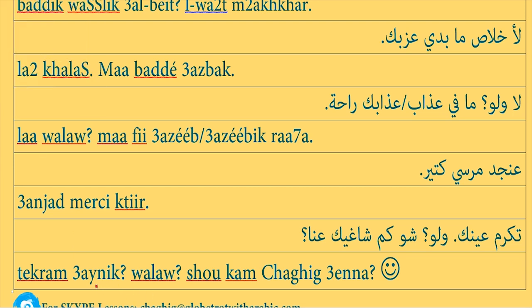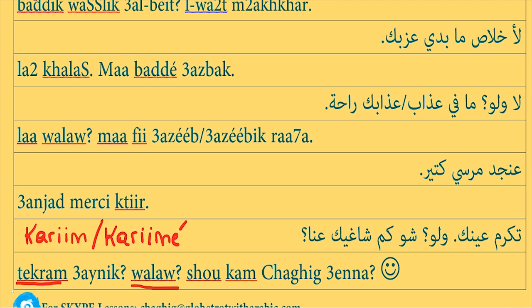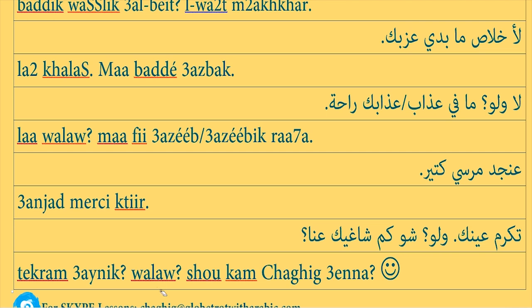From the verb تكرم we can extract the word كريم — the adjective meaning 'generous' in the masculine form, and كريمة in the feminine form. تكرم عينك is used when talking to a woman; تكرم عينك when talking to a man. The person also says ولو — you can use this in different contexts. In this positive context ولو means 'of course'. In a negative context, if someone does something impolite or inconsiderate, you say ولو — 'how can you do that?'